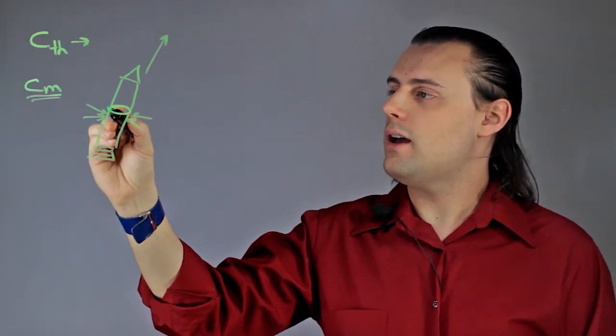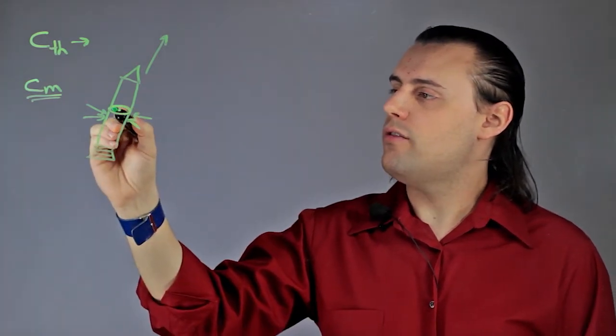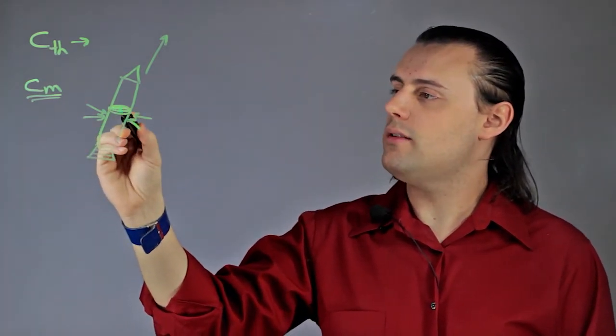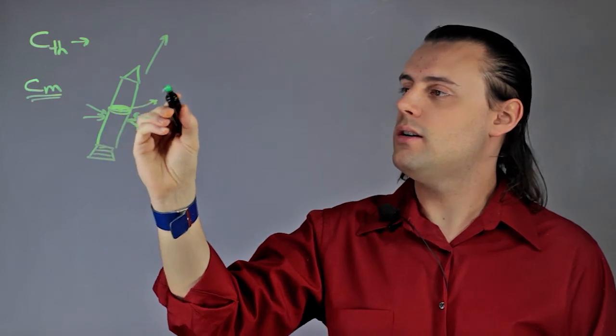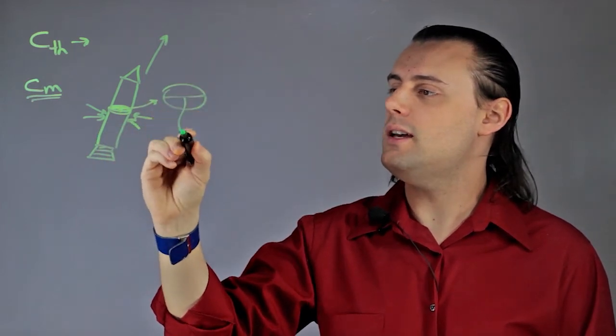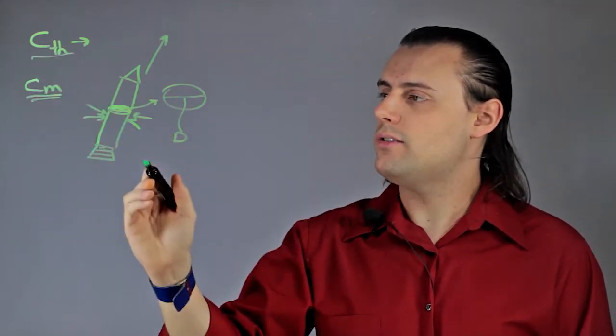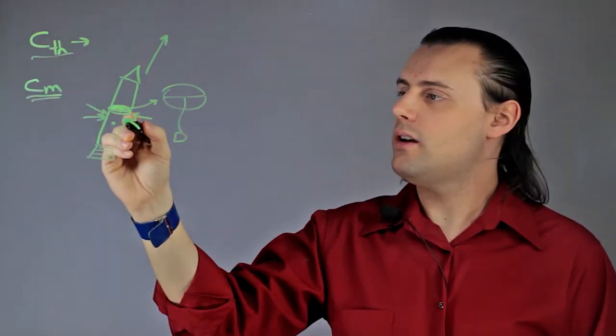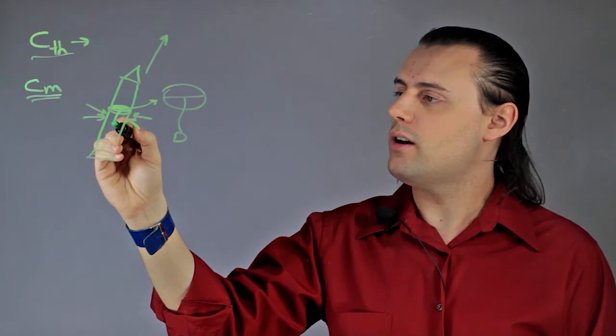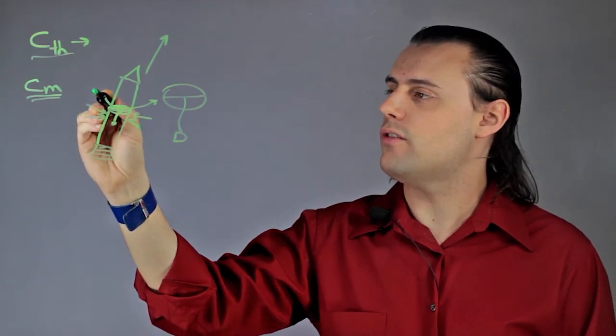So, as a general rule of thumb, if we have a cylindrical rocket with a cross-section of diameter D, then if the center of thrust is on the order of a diameter's worth of distance away from the center of mass,